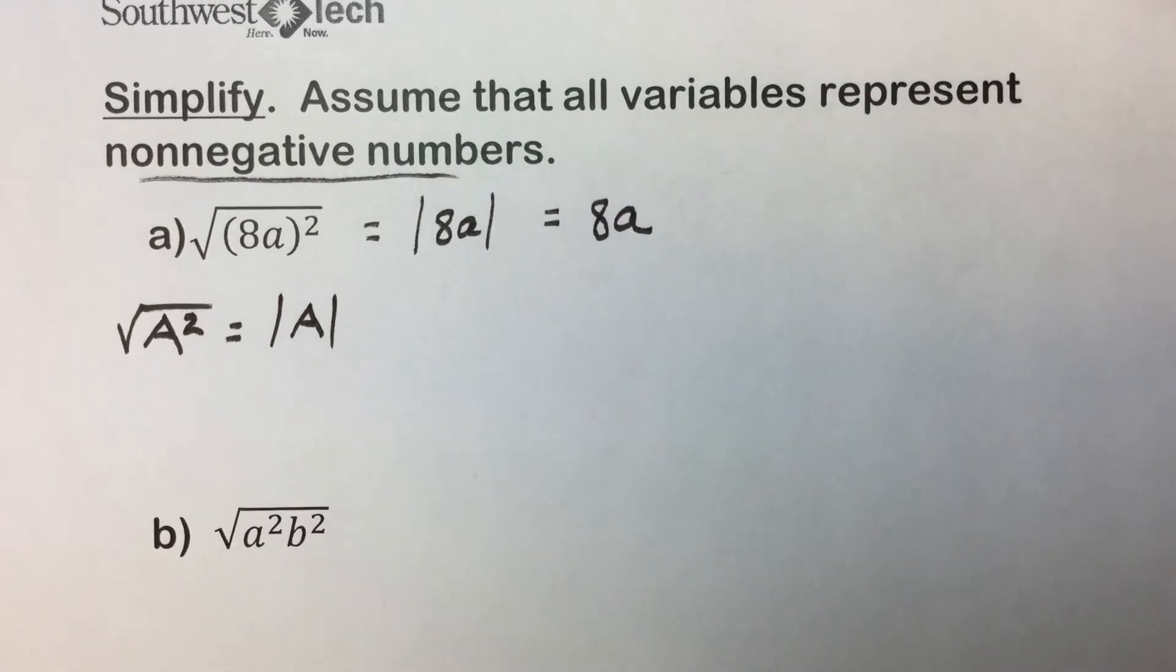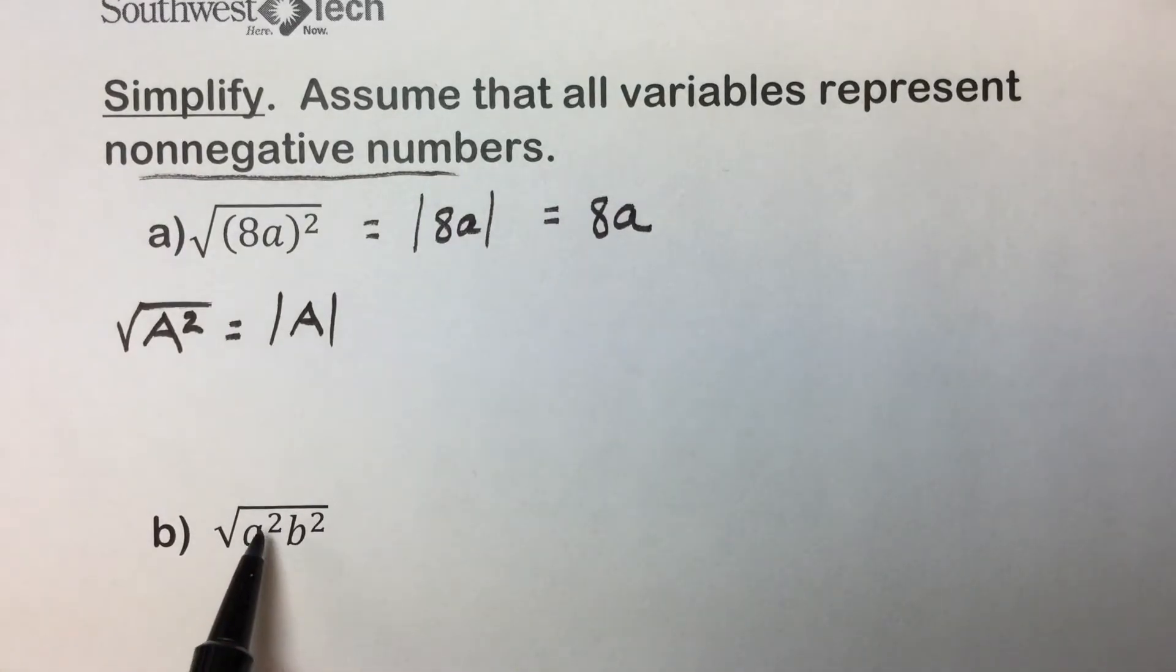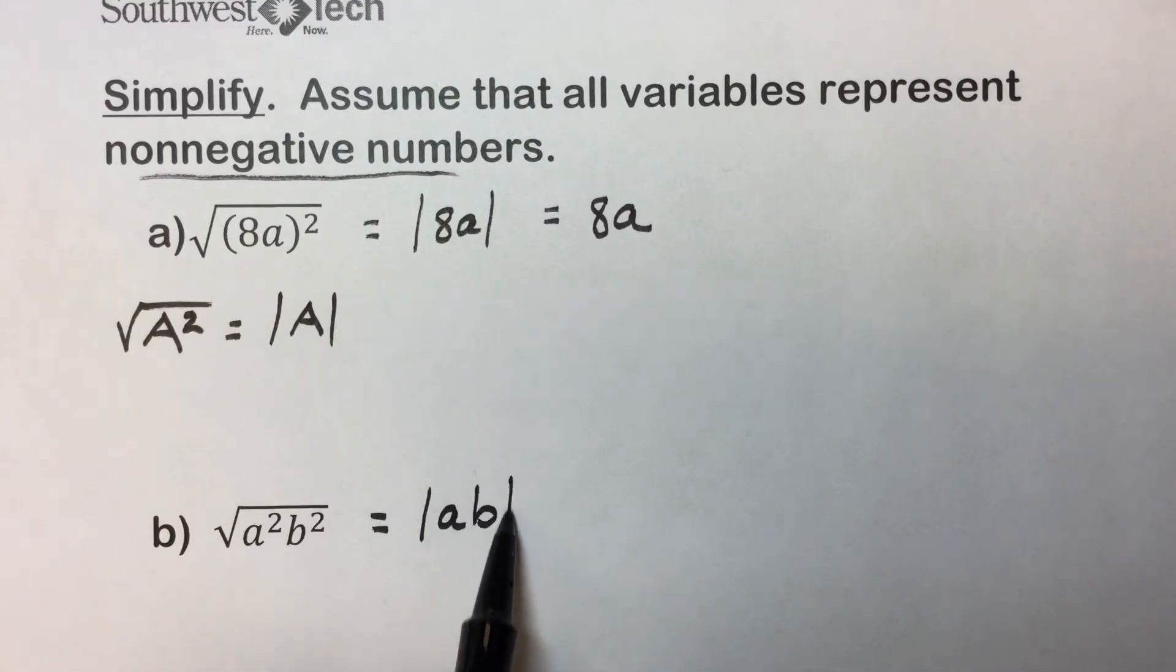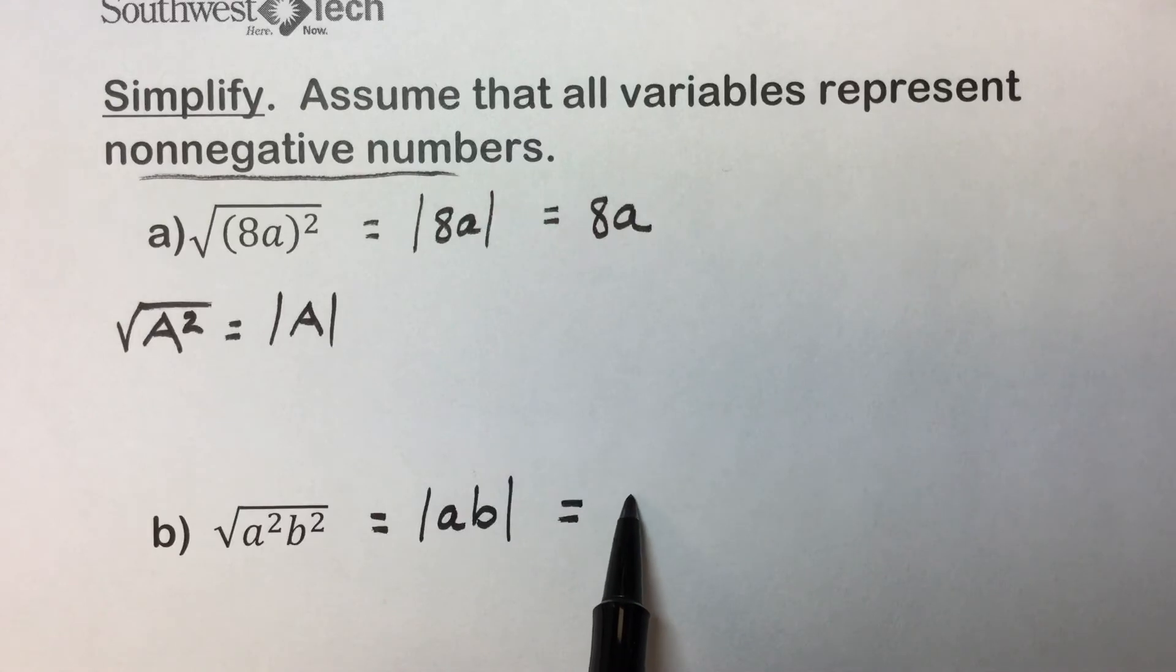Likewise, in this next example, we have terms that are each squared that we're taking the square root. The principal square root of these values will be the absolute value of each. And assuming they're non-negatives, we could simplify that and say our final answer is ab.